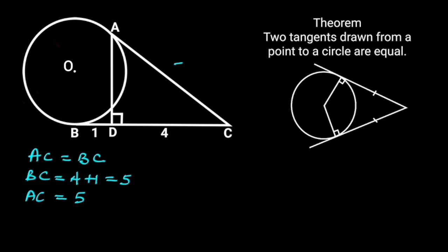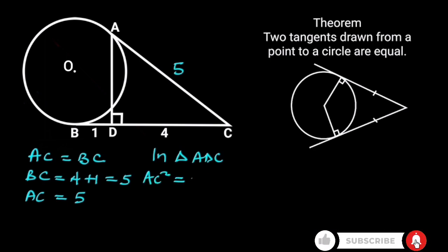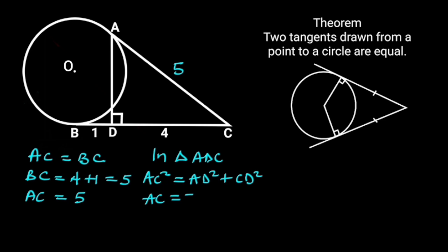Next, we are going to apply Pythagoras theorem in triangle ADC to find AD. From Pythagoras theorem, AC squared is equal to AD squared plus CD squared. AC is equal to 5 and CD is equal to 4.